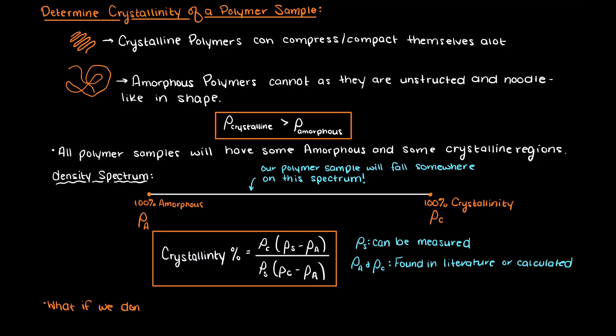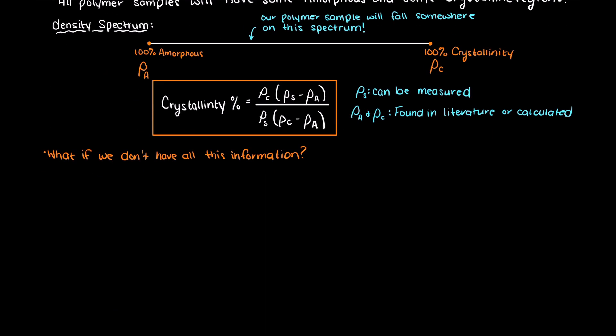So what do we do if we don't have all this information and cannot find it online? Well then we need to use DSC or some other laboratory quantification method. DSC is very common as it is quick and easy if you have the proper equipment available to you. DSC stands for differential scanning calorimetry.